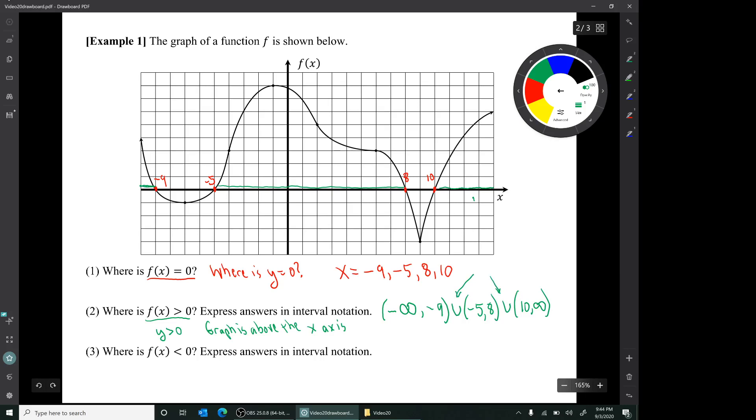These things that look like u's - this is called the union. So the set on which f(x) is greater than zero is this union of three intervals. This is called interval notation. Our book is actually sloppy about this. The book says find the interval where f(x) is greater than zero or something like that. Well, this is technically not an interval. It's a union of three intervals.